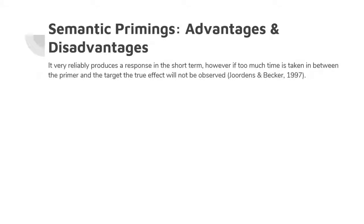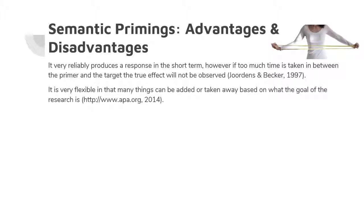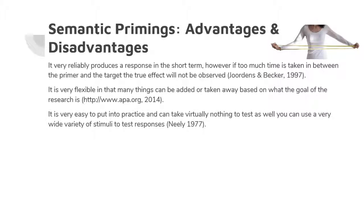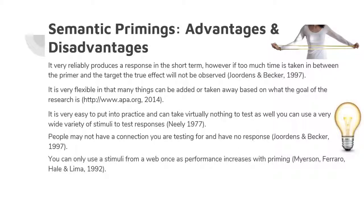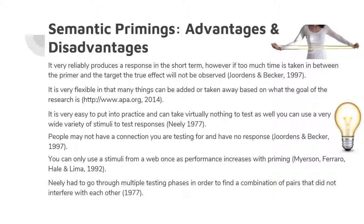Semantic priming reliably produces a response in the short term. However, if too much time is allowed between the primer and the target, the true effect will not be seen. This method is also very valuable because of its flexibility, in that it can be altered to provide more or different data about the mental lexicon. Additionally, this method is easily put into practice and a wide variety of stimuli can be used. However, some people may not elicit a response. Furthermore, a category of stimuli can only be activated once, because performance increases with priming and will affect results. Neely had to go through multiple testing phases to find word pairs that didn't interfere with each other.